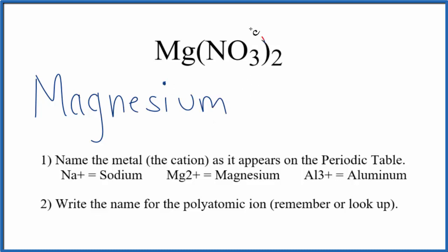Next, we'll write the name for this ion here, this nitrate ion. Nitrate NO3, lowercase n. That makes the name for Mg(NO3)2, magnesium nitrate.